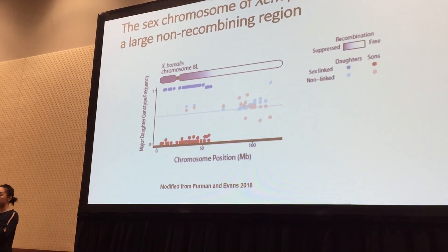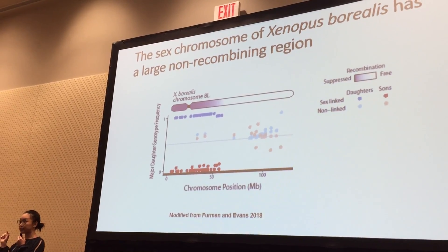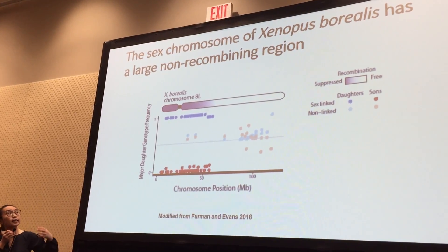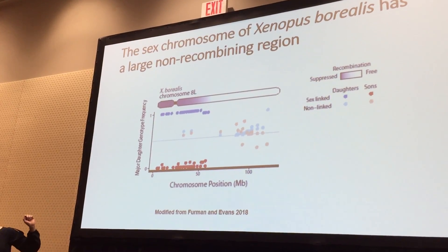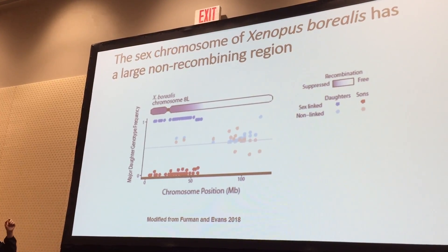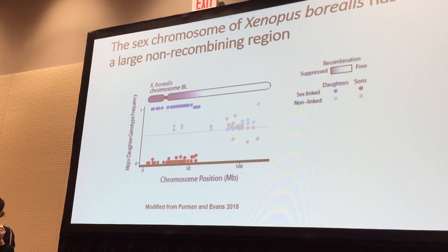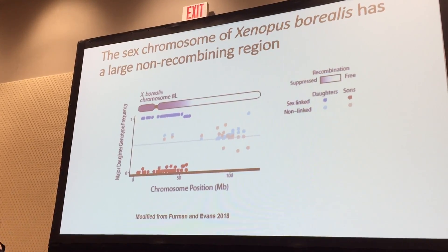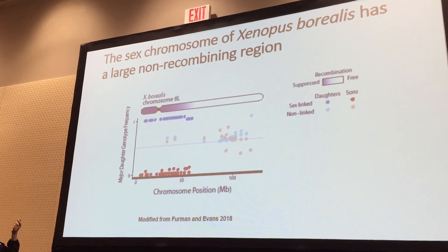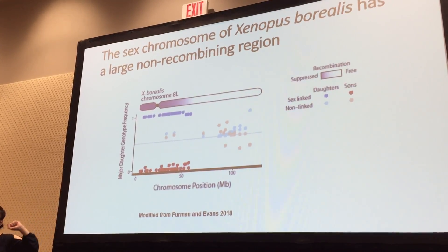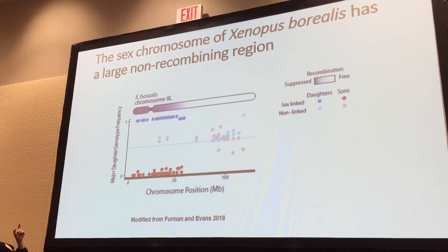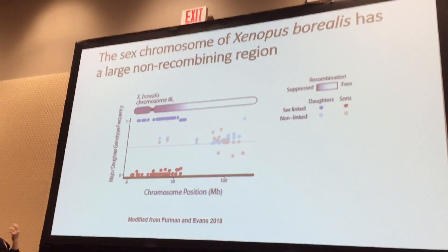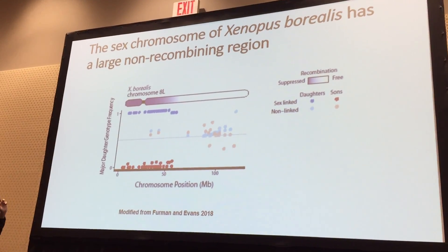We also know that on sex chromosome 2AL, there is a portion that is not recombining, highlighted in purple here. This plot shows how we know this region is non-recombining. On the X-axis are the chromosomal positions on 2AL, and on the Y-axis is the frequency of a mother's genotype being present in daughters or sons, shown as blue and red dots respectively. In the first 57 million base pairs, the mother's genotype is present in almost all daughters but none of the sons. If the chromosome were recombining, you would see the mother's genotype present in roughly half the daughters and half the sons.